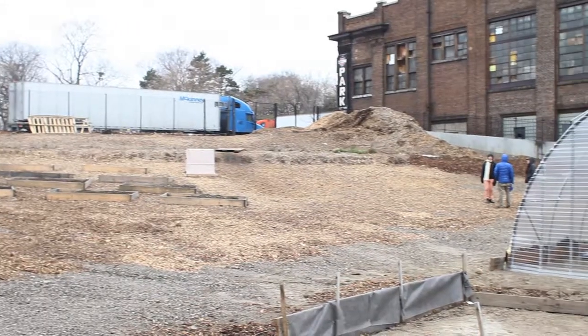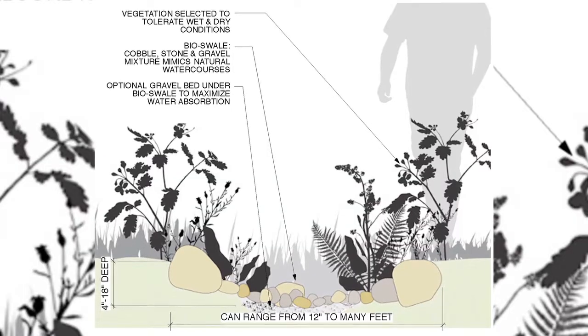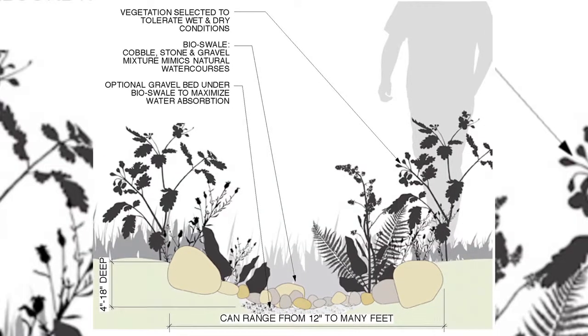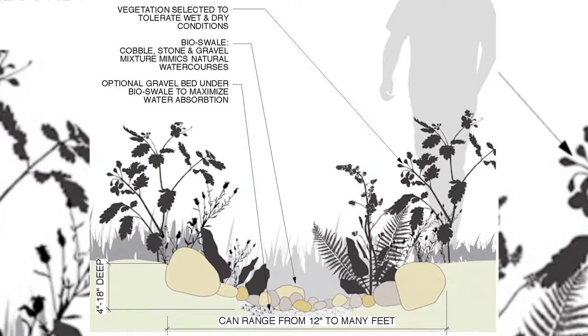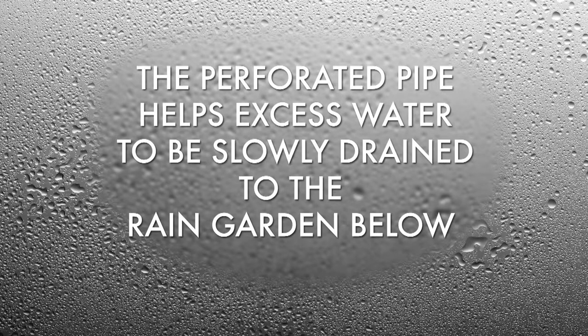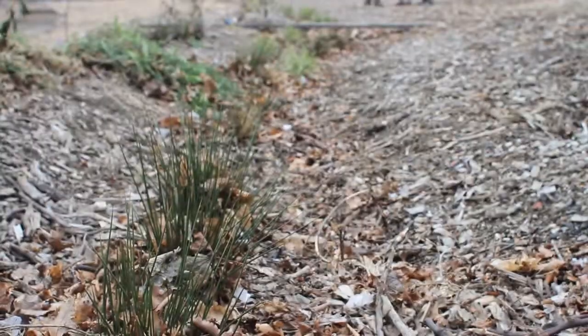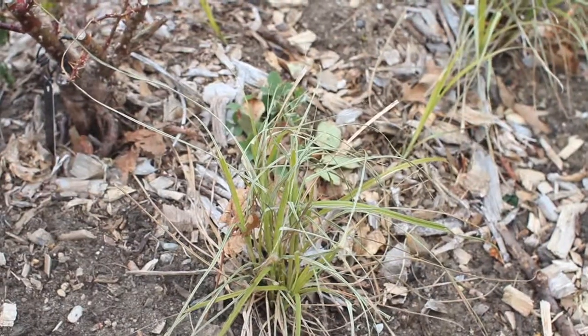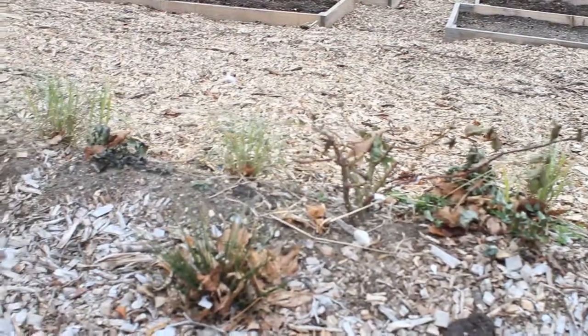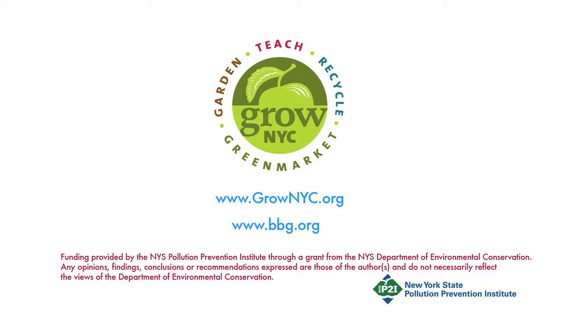This soil is so compacted that we just took a pickaxe and started digging, to a total depth between a foot and a foot and a half. That's where we sunk a perforated pipe. The basin of the swale is going to be wet for most months of the year, so you really have to choose plants that are able to take up a lot of water throughout their growth period.